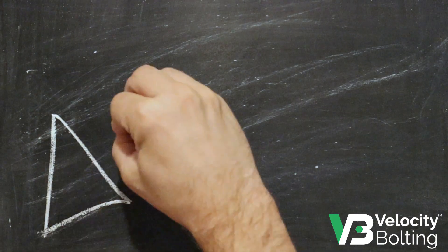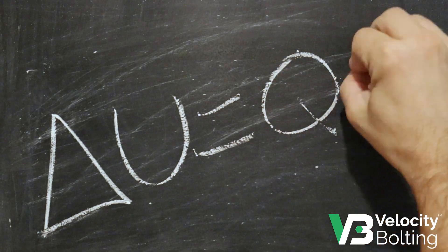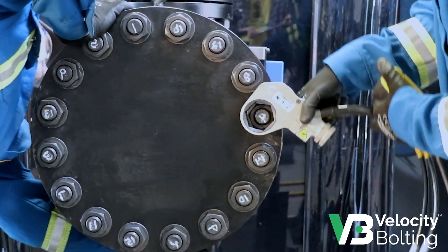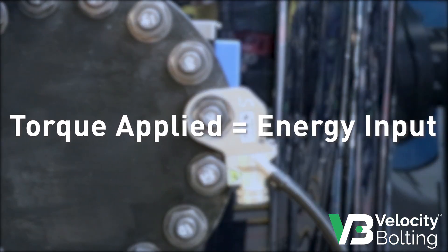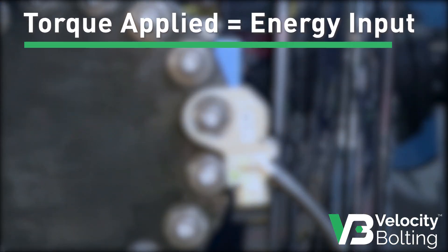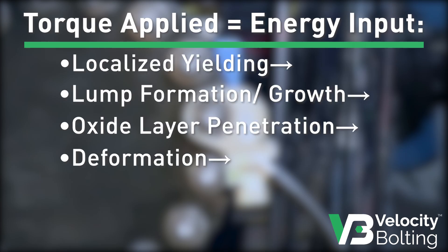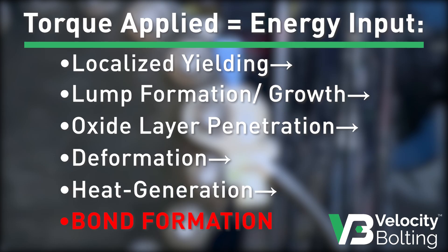As we've seen, galling is a process that requires mechanical and thermodynamic milestones to be met. The torque applied to turn the nut under load is the sole source of energy input. This energy drives the galling process through localized yielding, lump formation and growth, oxide layer penetration, deformation and heat generation, and eventual bond formation.